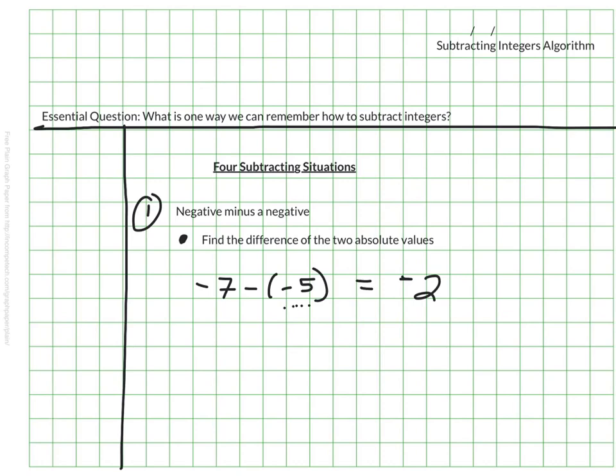On the other hand, if we have negative 5 minus negative 7, we still have two negatives, so we're still looking for the absolute values in between. So 7 minus 5 is still 2, but this time it's positive 2, because if we move 7 units to the right, it will land us in positive territory. So we have to picture that number line a bit.